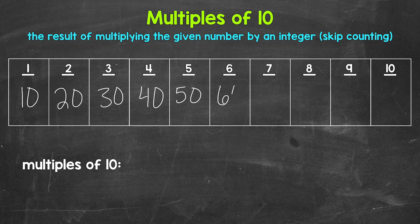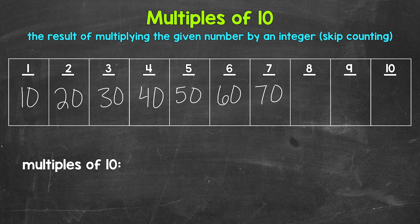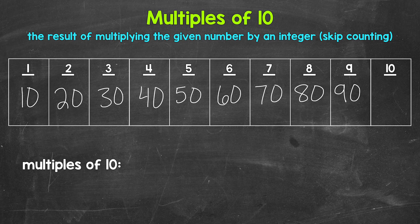6 times 10 is 60. 7 times 10 is 70. 8 times 10 is 80. 9 times 10 is 90. And 10 times 10 is 100. Those are the first 10 multiples of 10. Now do the multiples stop there? No. They continue on forever. Multiples are infinite.